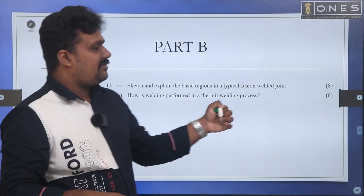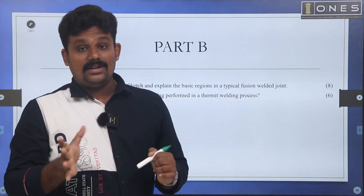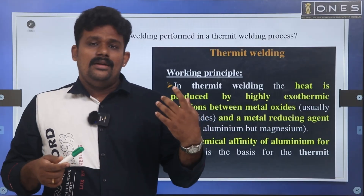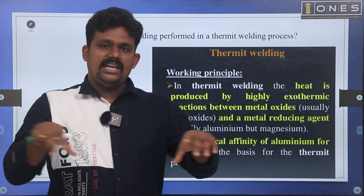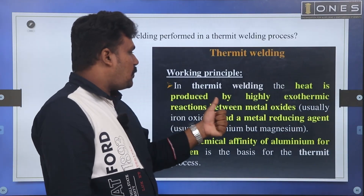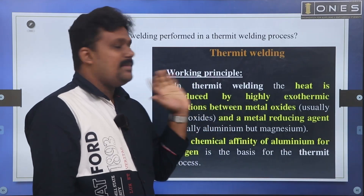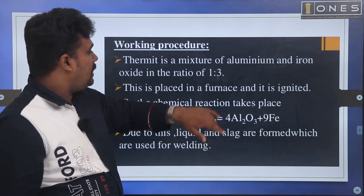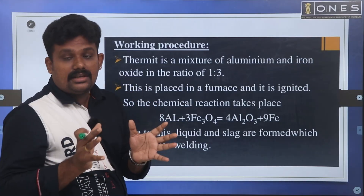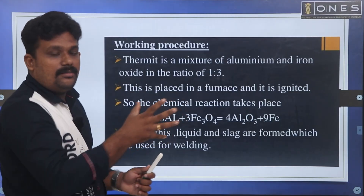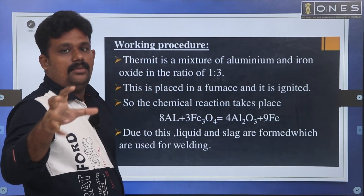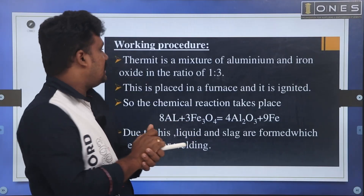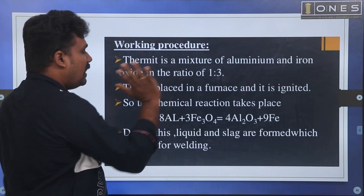How is welding performed in a thermit welding process? Thermit welding is a special welding technique mainly used for railway lines. In thermit welding, heat is produced by a highly exothermic reaction between metals. The chemical affinity of aluminum for oxygen is the basis of the thermit process. The reaction involves aluminum and iron oxide.